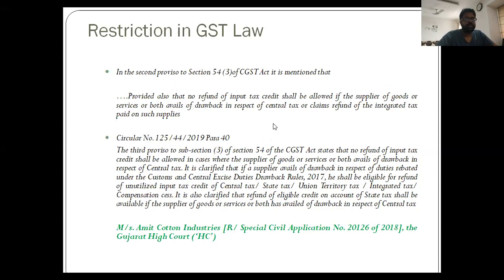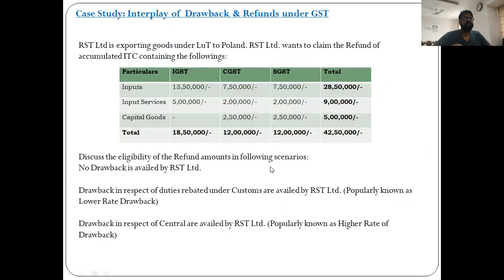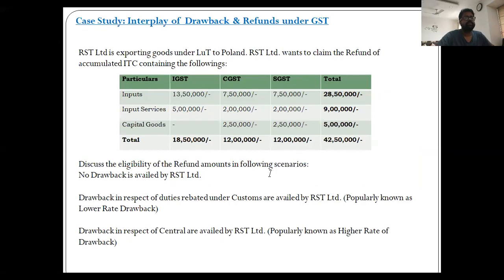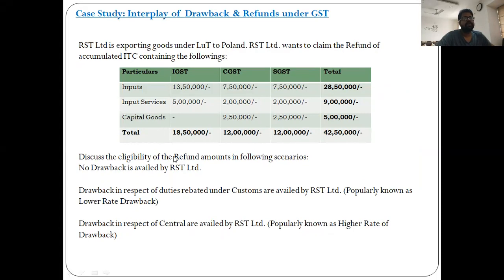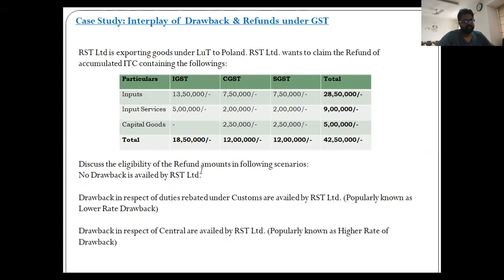Looking at the example on screen: Scenario A — what is the ITC eligible to be claimed as refund if no drawback is availed? That would be Rs. 37,50,000, because capital goods are not allowed in the case of accumulated ITC refund in the context of exports.